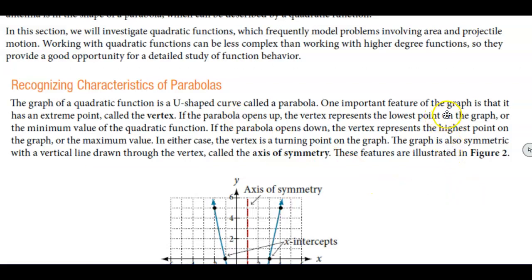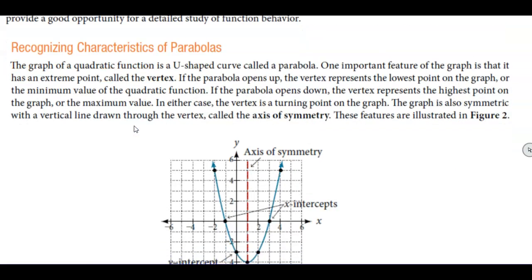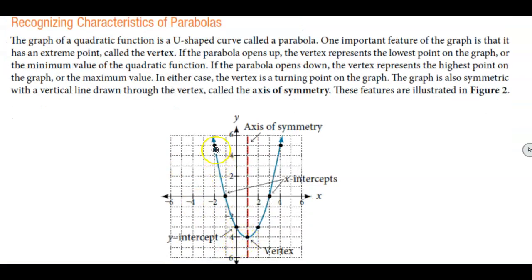One important feature of the graph is that it has an extreme point called the vertex. In this particular parabola down here is what we call the vertex. If the parabola opens up then the vertex represents the lowest point on the graph or the minimum value of the quadratic function.